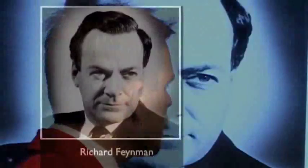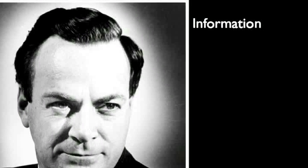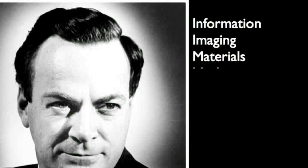Feynman disagreed. He argued that by making things very small, by doing science at a very, very small scale, we could revolutionize a number of things. In fact, he articulated four specific areas where we might make a big difference: information, imaging, materials, and machinery.